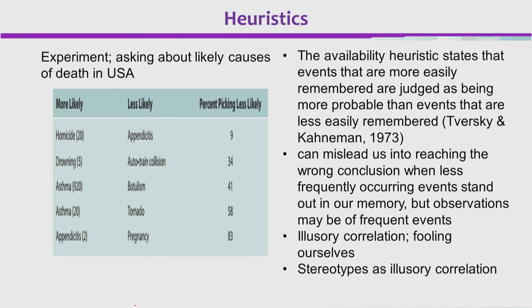yeh logon se poochta hai ki USA mein death ka cause kya hai. Toh homicide more likely hai, appendicitis less likely hai. Kitne logon ne homicide ko less likely pick kiya? Halanke actually, jo homicide hai, wo zyada aapko nazar aa raha hai.